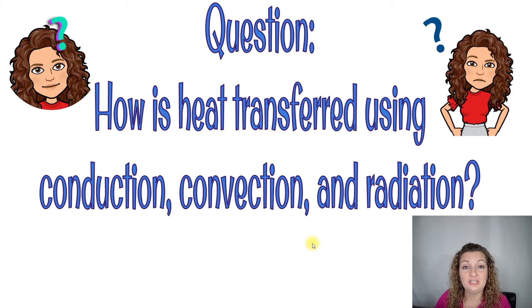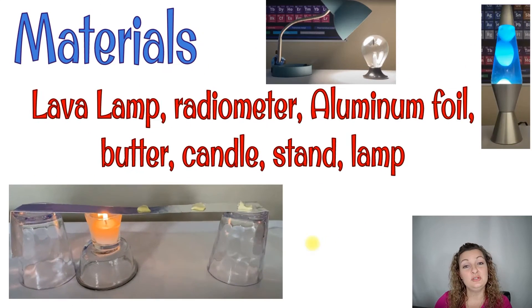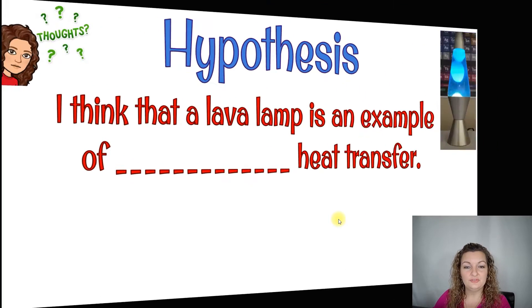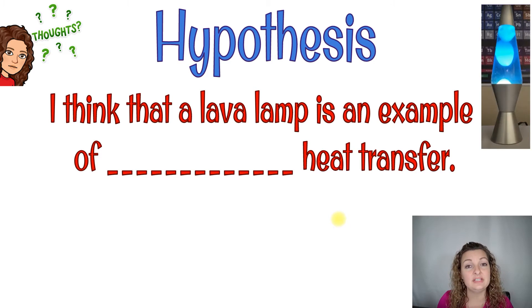Those are the three types of heat transfer that we've been studying. So let's take a closer look by doing three different lab experiment demos. The materials that we're using today are going to be a lava lamp, a radiometer, aluminum foil, butter, candle stand, and a lamp. The first one we're going to do is look at a lava lamp up close as it's turned on.